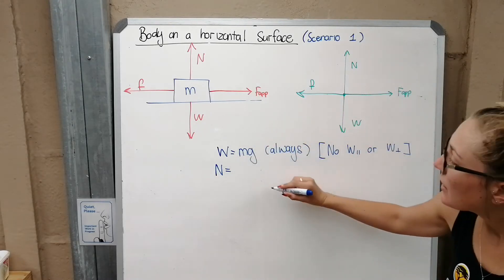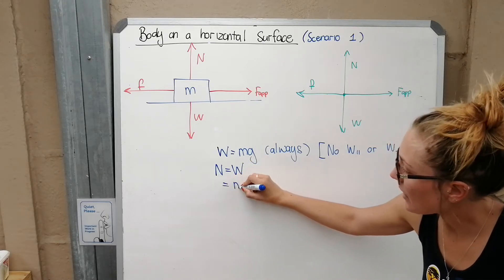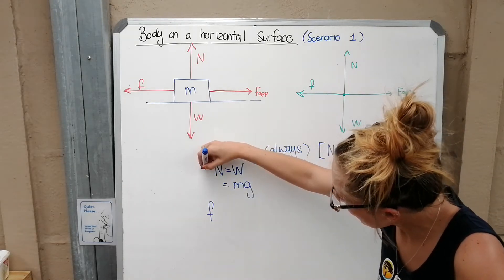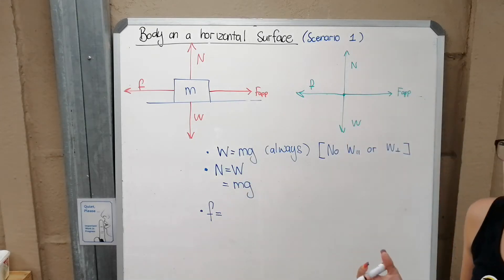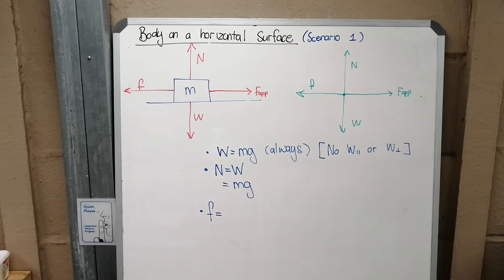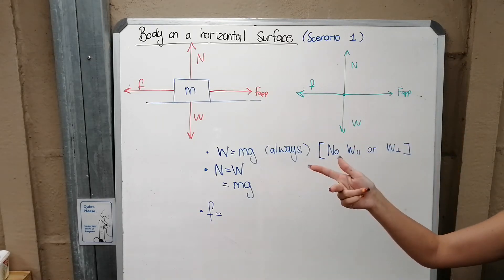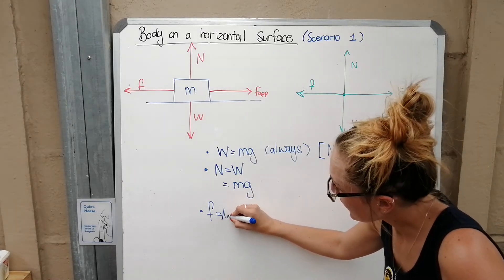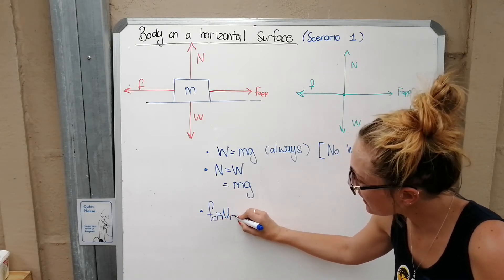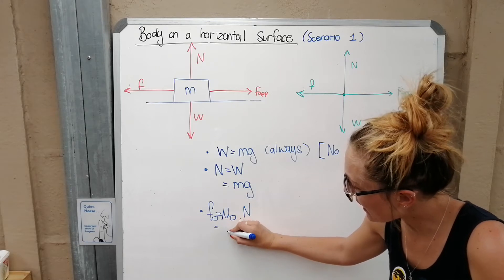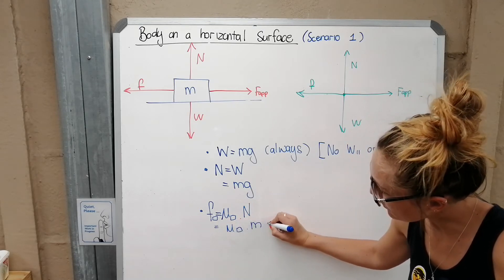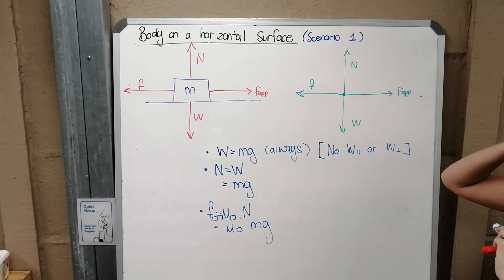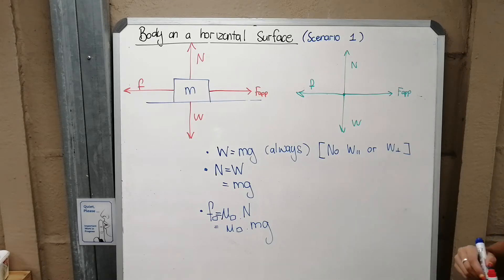For normal force in this scenario, the normal force equals weight, which equals mg. For friction, it depends on the type: it's usually maximum static or kinetic friction, and it equals μ (the relevant coefficient) times the normal force, which can be expanded to μ times mg in this scenario. The applied force would have to be found using Newton's second law.